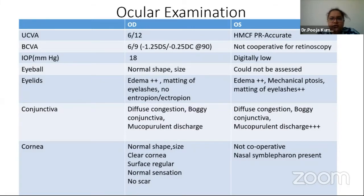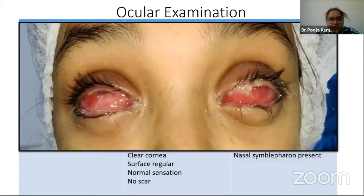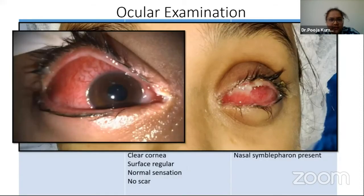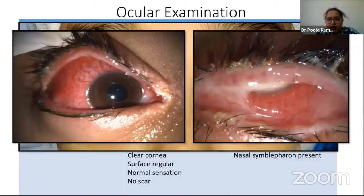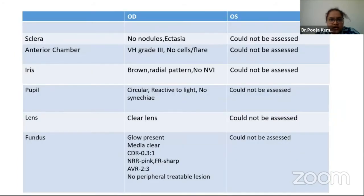In the left eye, visual acuity was hand movements close to face, with accurate projection of rays in all four quadrants. Similar findings were present in the left eye, but the child was not very cooperative for examination, so we took her for examination under regional anesthesia. Here we can see mucopurulent discharge with a boggy conjunctiva. When the eye was opened, we could hardly see the cornea. In the left eye, the discharge was very adherent to the conjunctiva, and a symblepharon-like picture was present in the nasal area.